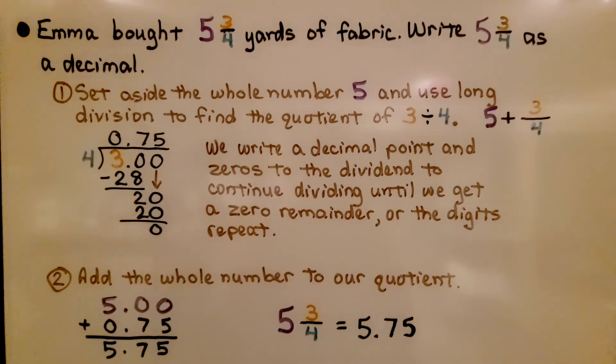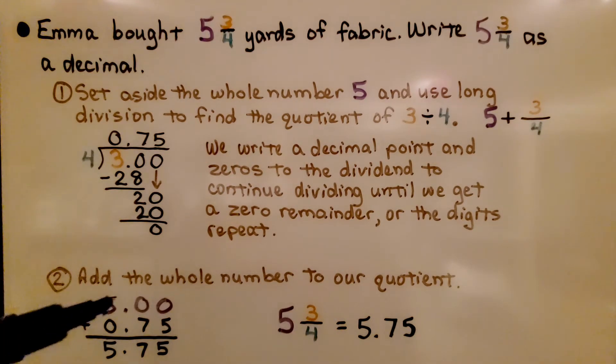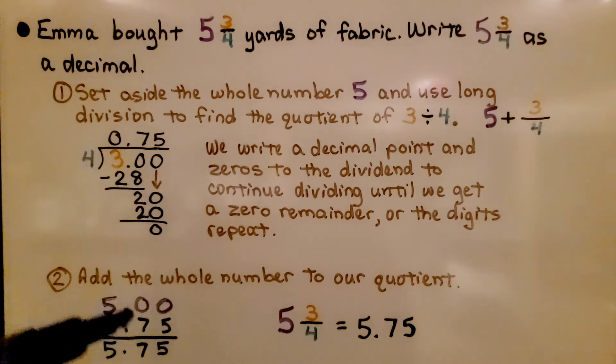Now we add the whole number to our quotient. We add 5 as a whole number. We can even write a decimal point and a couple of zeros so they have the same number of digits. We have 5 and 75 hundredths.